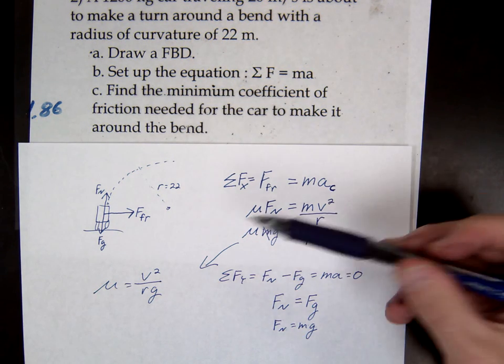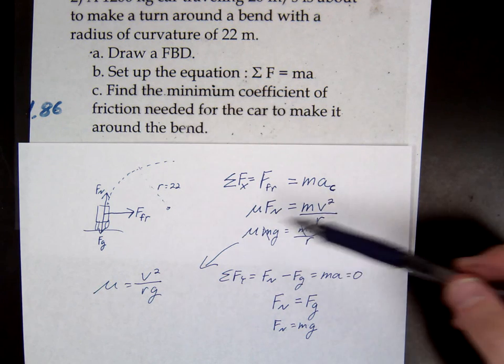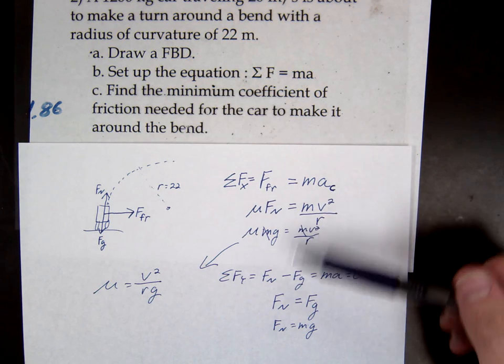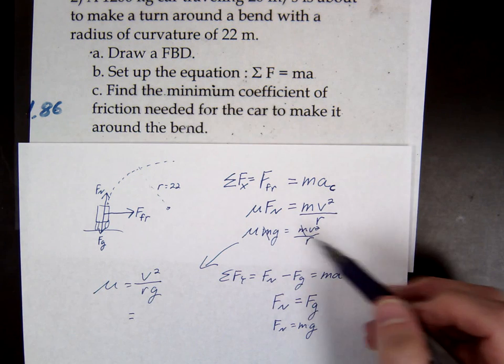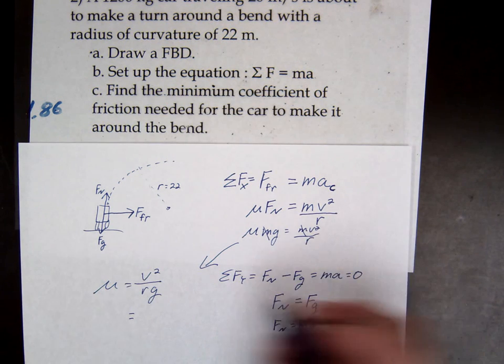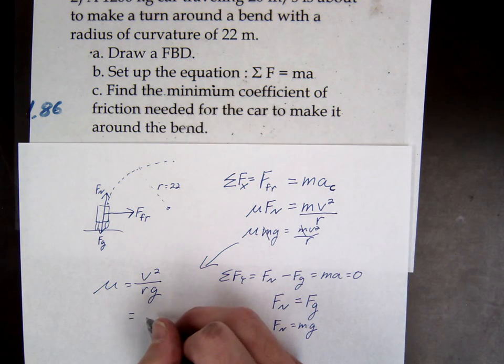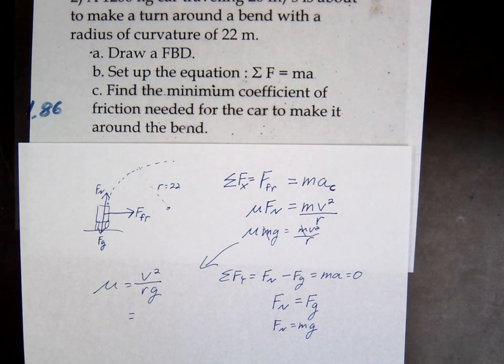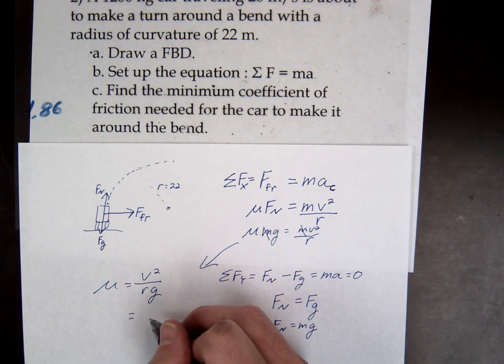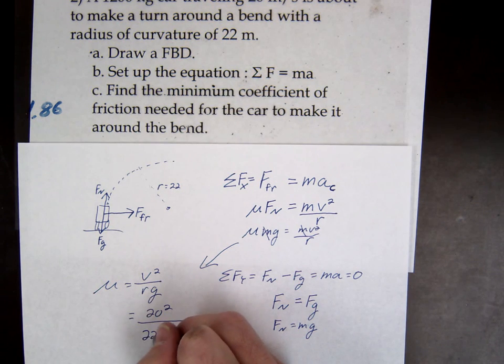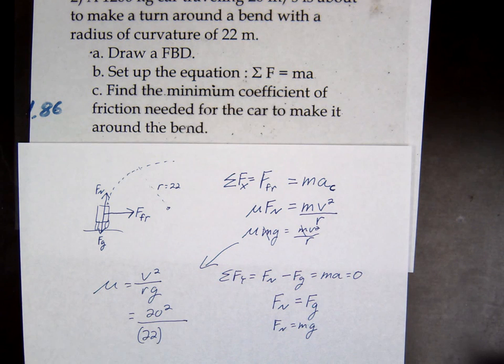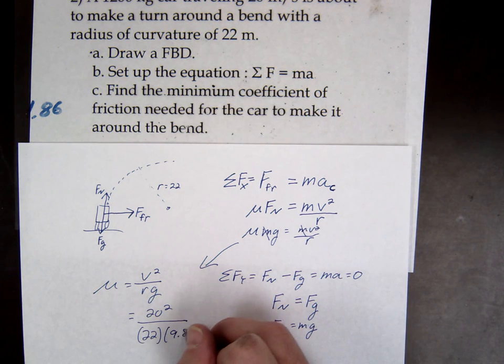Of course you have numbers you could start solving things at any time. I just wanted to do it all at once, especially so you could see how the mass didn't matter. Let's plug in the numbers. What was our v? 20. 20 squared divided by our radius which was 22 divided by our g, 9.8.